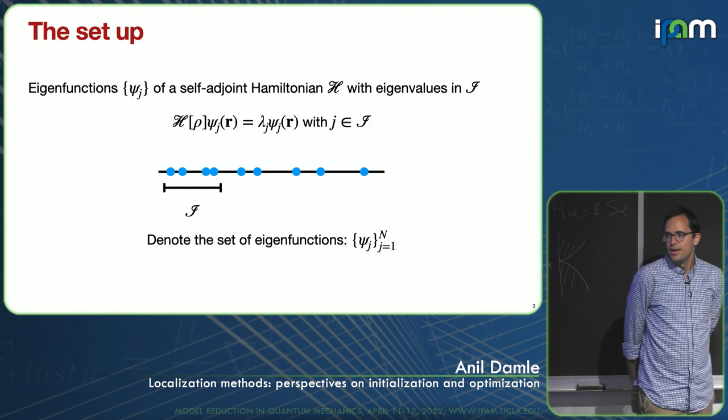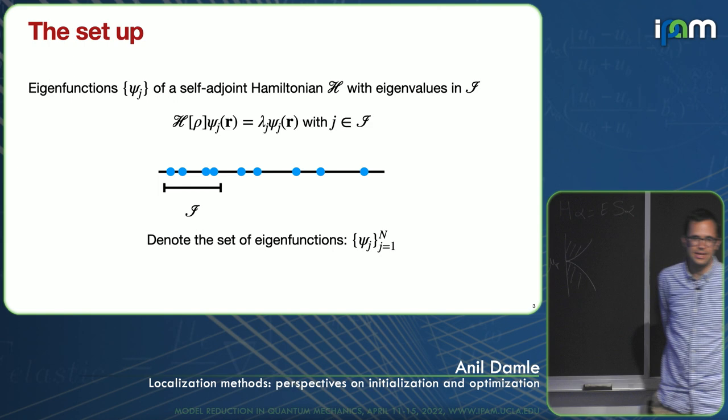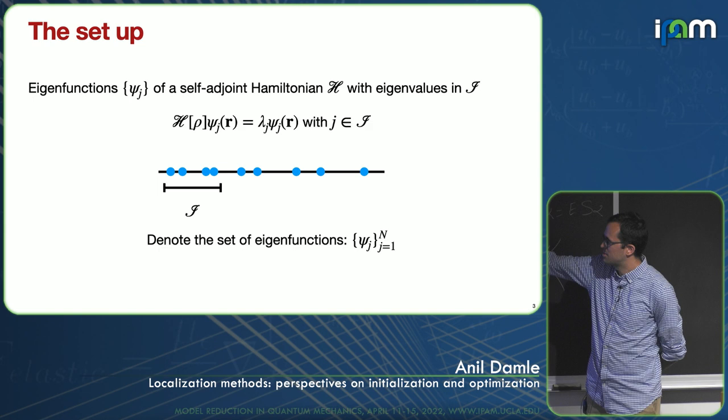For the sake of this talk, I'm going to think about having some set of eigenfunctions of a solid-state Hamiltonian — all the ones with eigenvalues in some interval I. For the moment, you can think of this as the lowest N eigenvalues of the operator. I'll denote these as psi_j for j equals one to capital N. Later I'll talk about how defining I becomes more complicated, but for now, let's imagine I solve some self-consistent problem and get some eigenfunctions and eigenvalues — N of them.